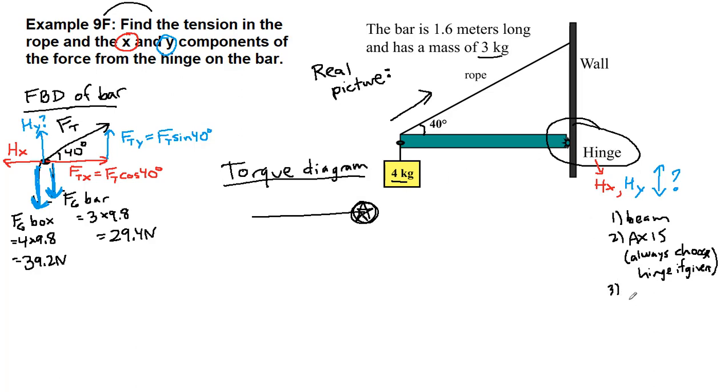So step three of our torque diagram is to draw the forces. And we only care about the forces that are away from the hinge. That means that Hx and Hy will not show up in this diagram. So if we start at the hinge and we go partway along, we get to the force of gravity of the bar itself. Halfway along the bar is where that 29.4 newtons is acting. And if we continue on at the very end of the bar, we have the 39.2 newtons acting.